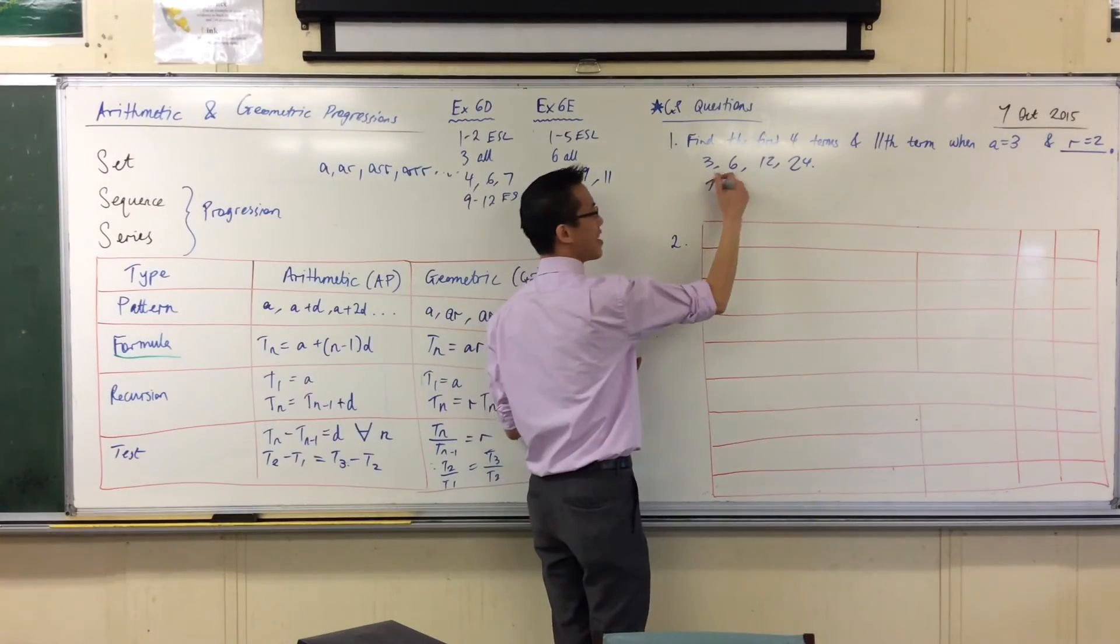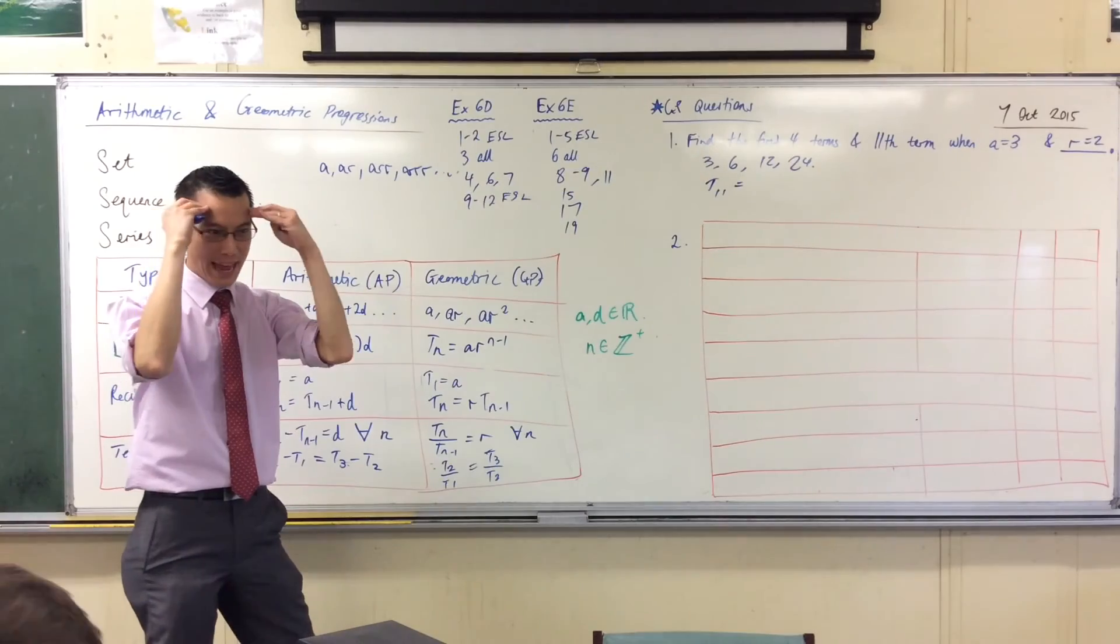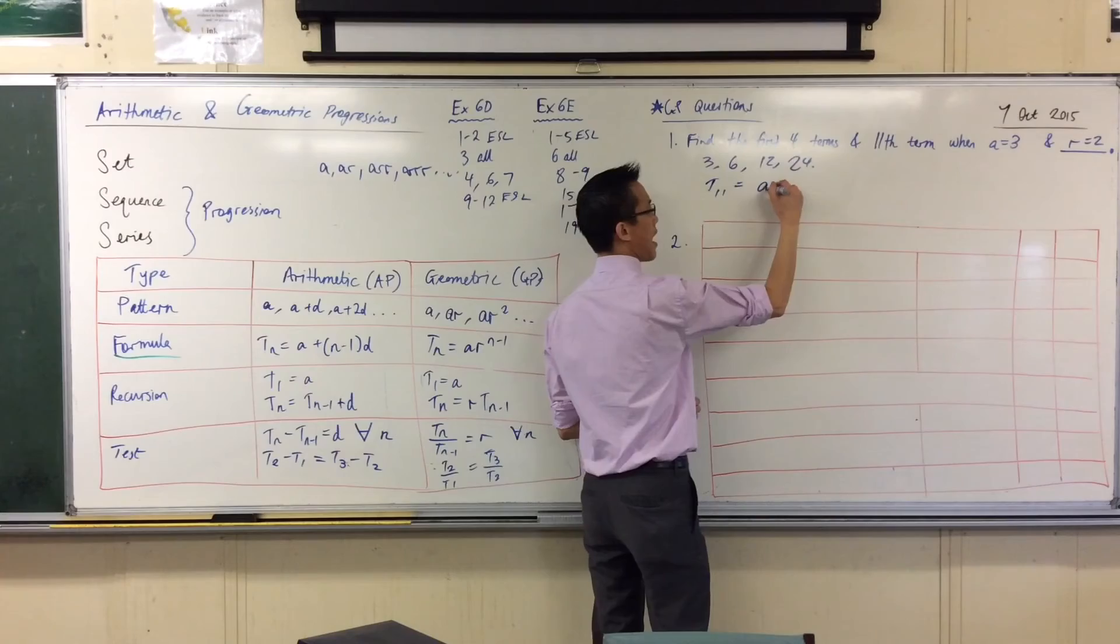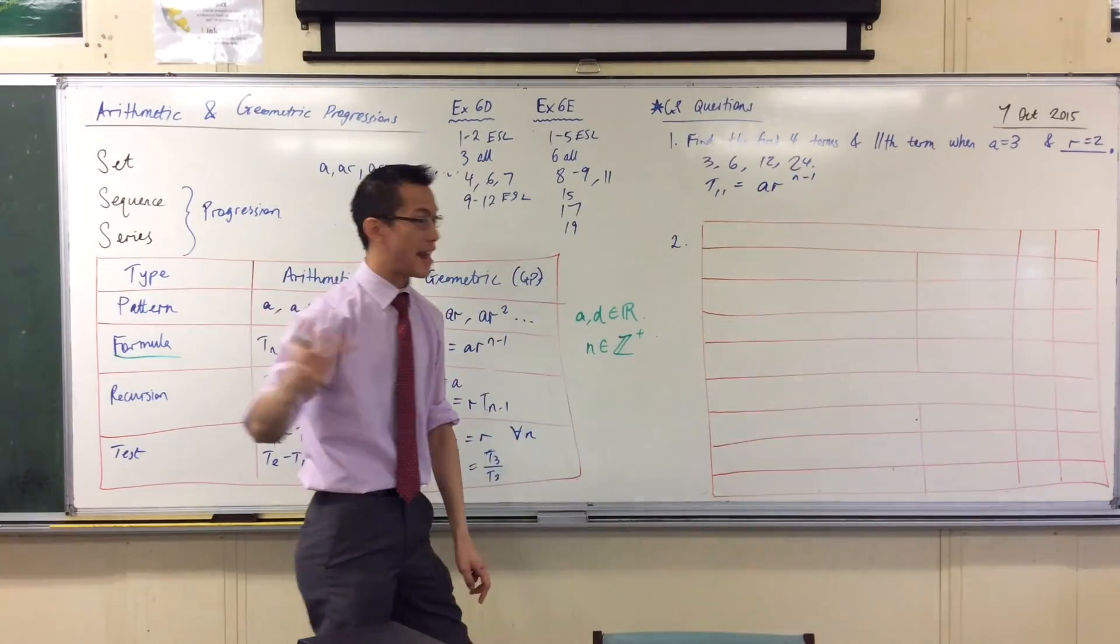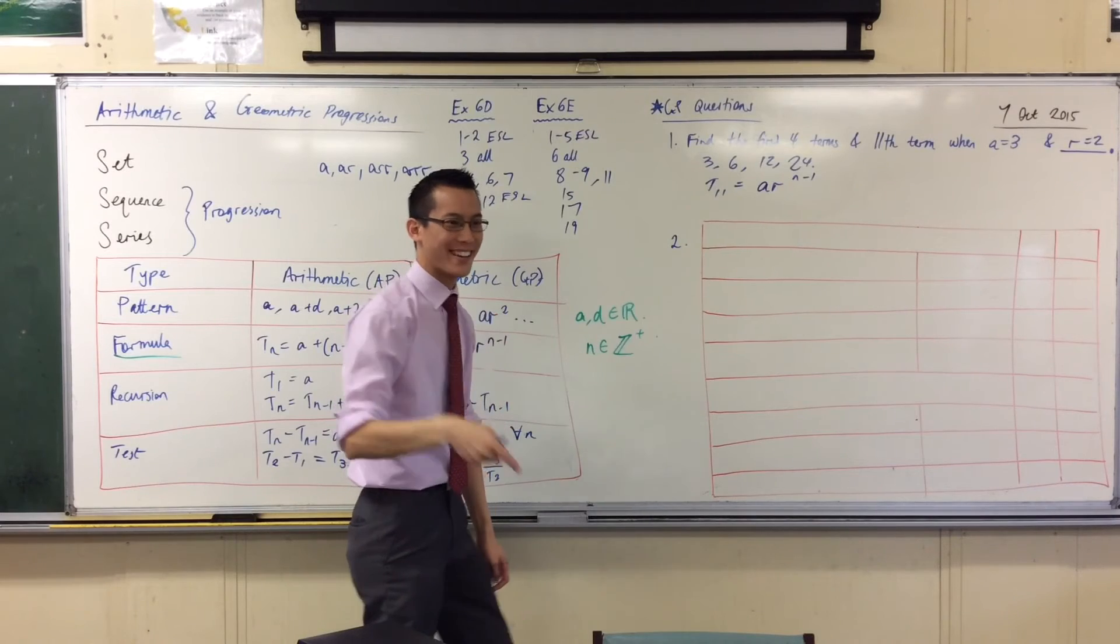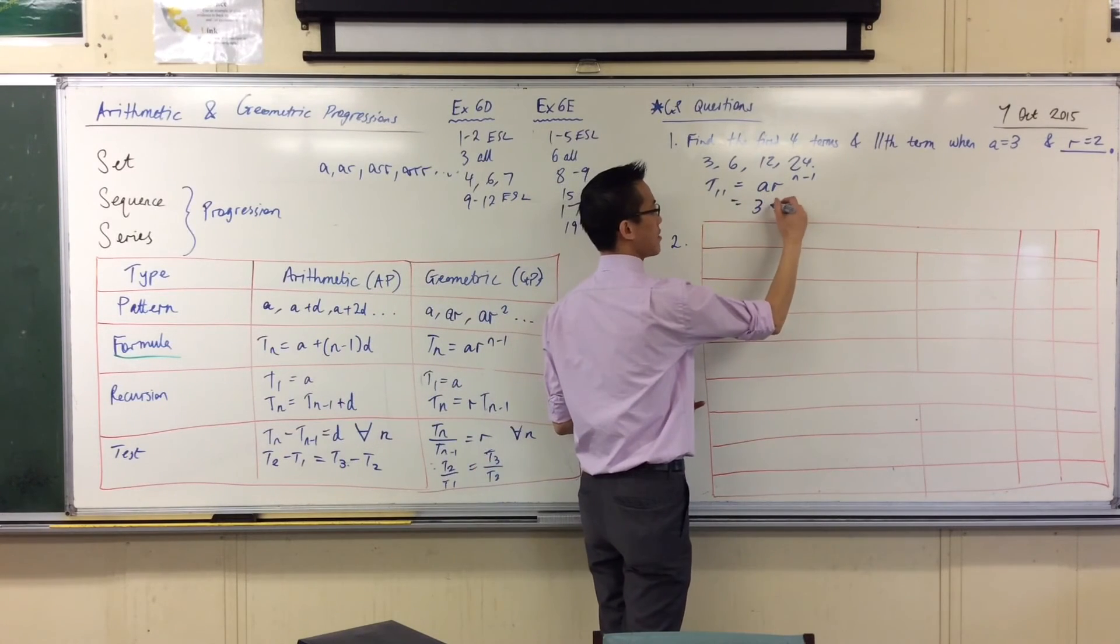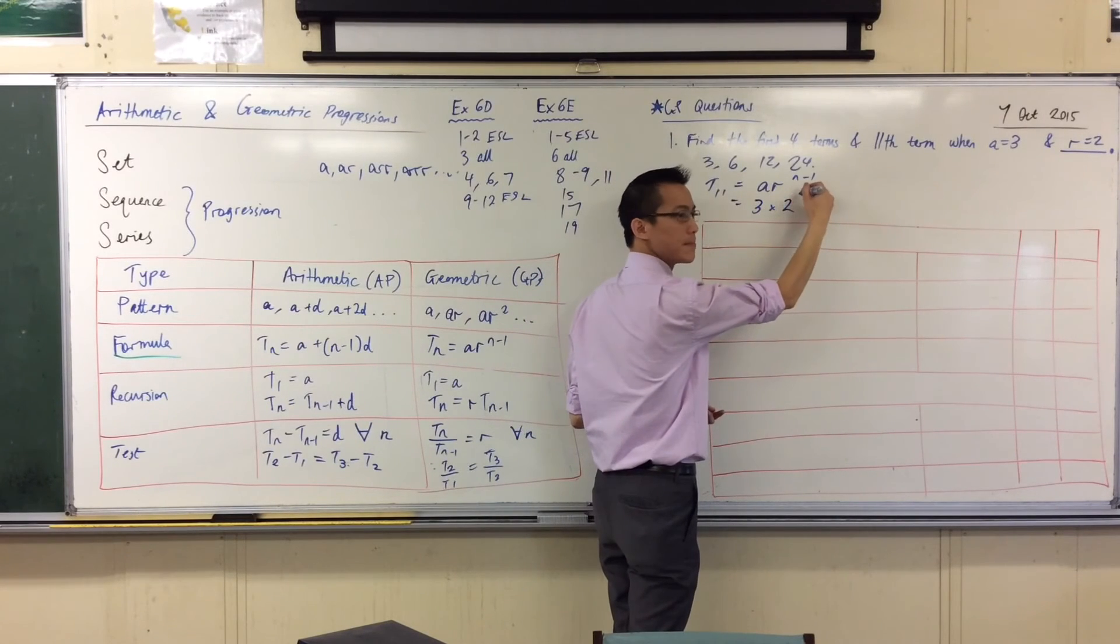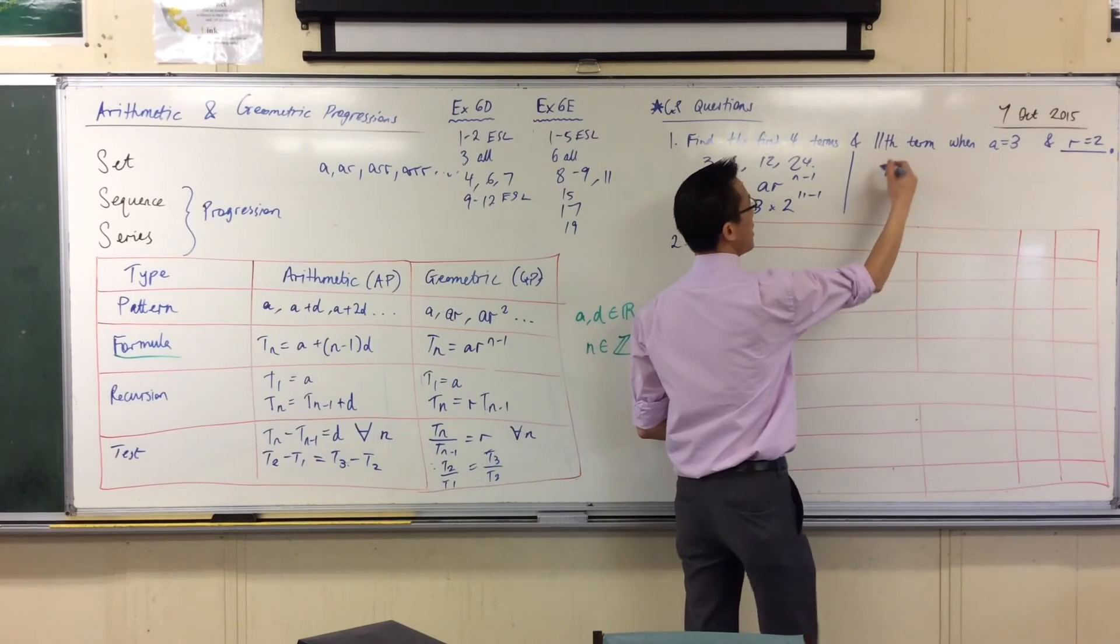To get straight to the eleventh term, again, just like before, I'm going to write down to get it into my head at this early stage. I'm going to write down my formula, which is AR to the N minus one. And I know what A and R and N are. Okay, so I'm going to write this in. Three times two to the... Three times two to the... Eleven. Two to the... Eleven minus one, which is ten.